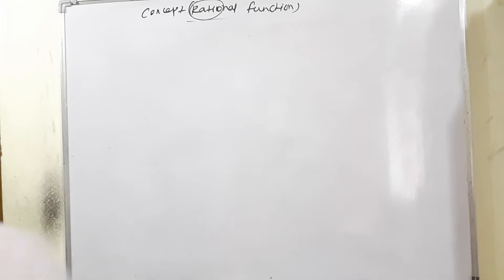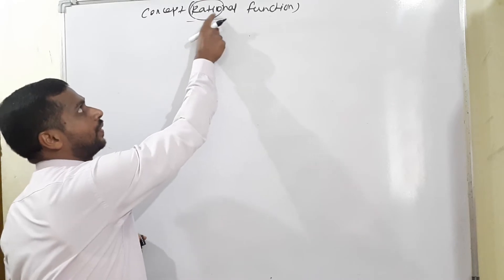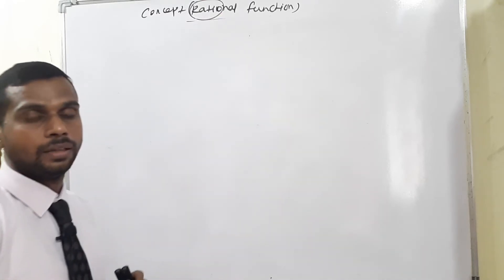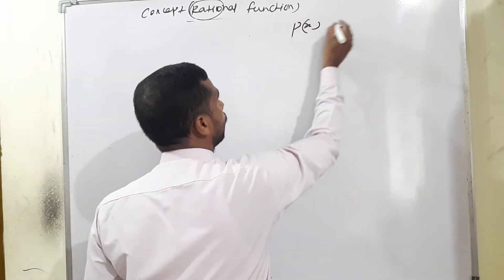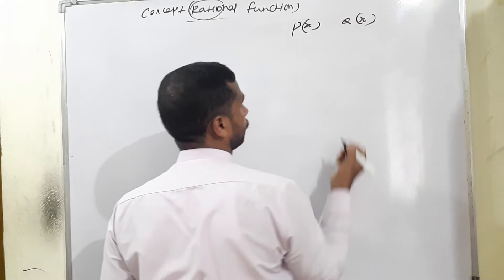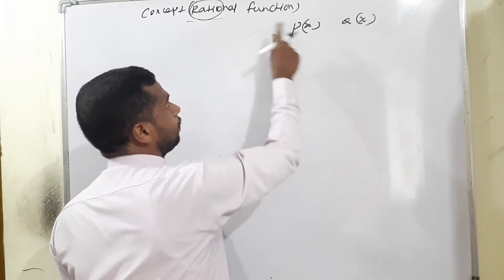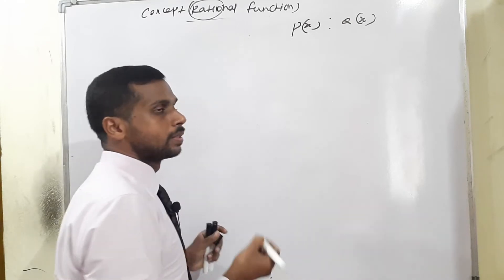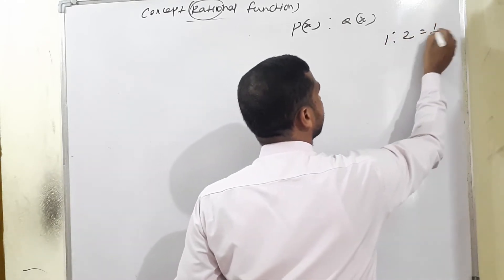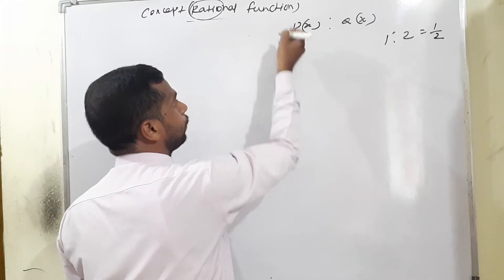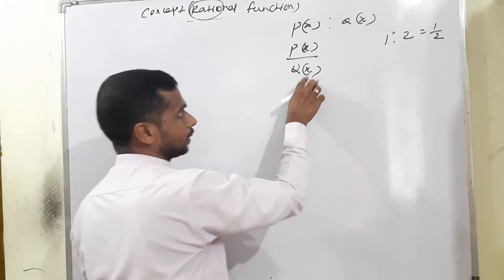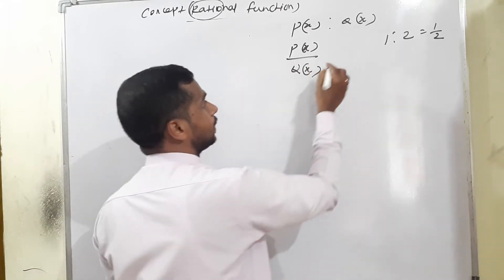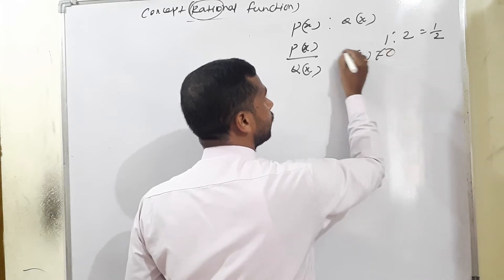Moving to the important concept of rational functions. The word 'rational' comes from 'ratio.' A rational function is p(x) divided by q(x), where both are polynomial functions, with one important condition: q(x) must not equal zero. If the denominator q(x) = 0, the function is undefined.